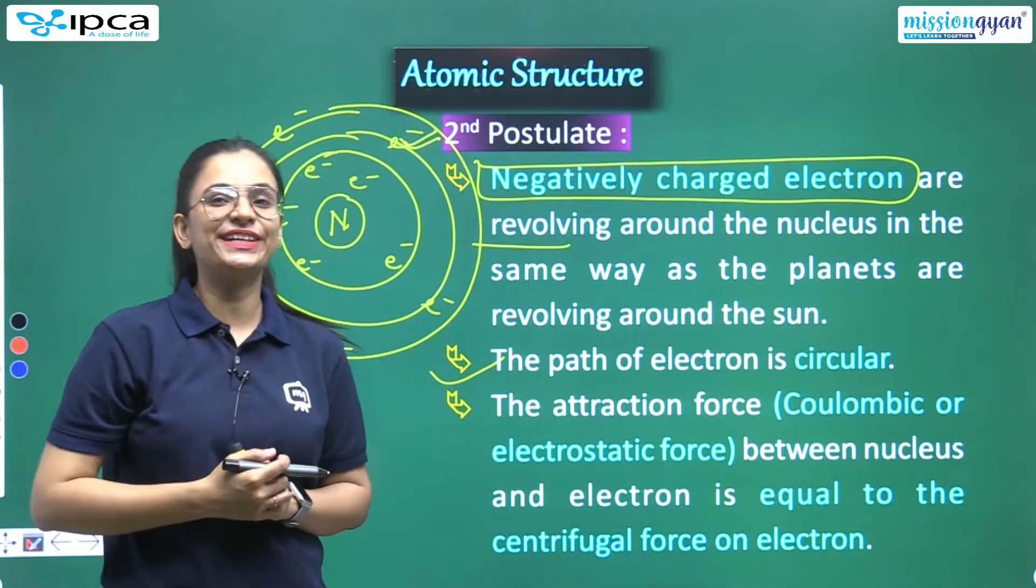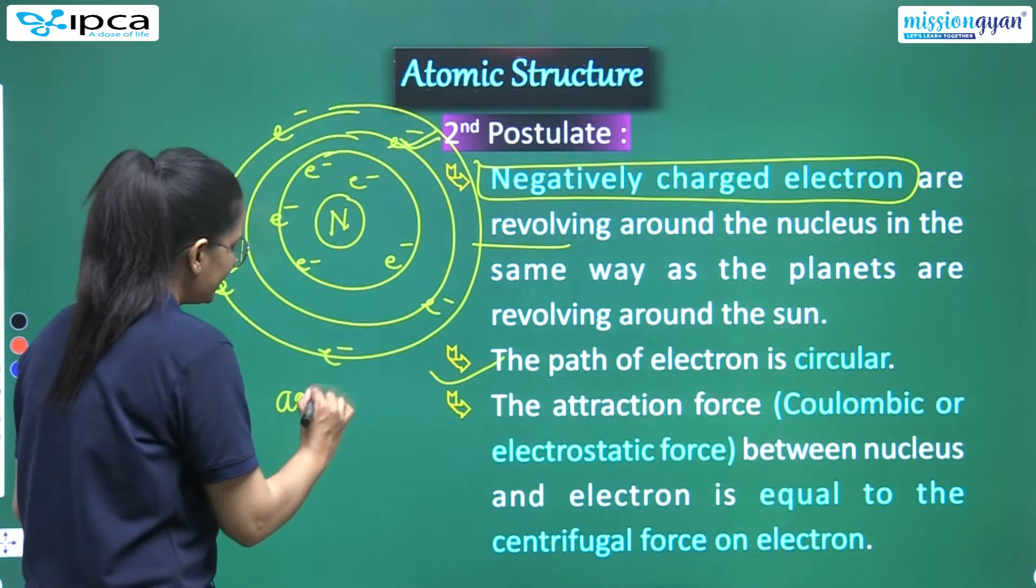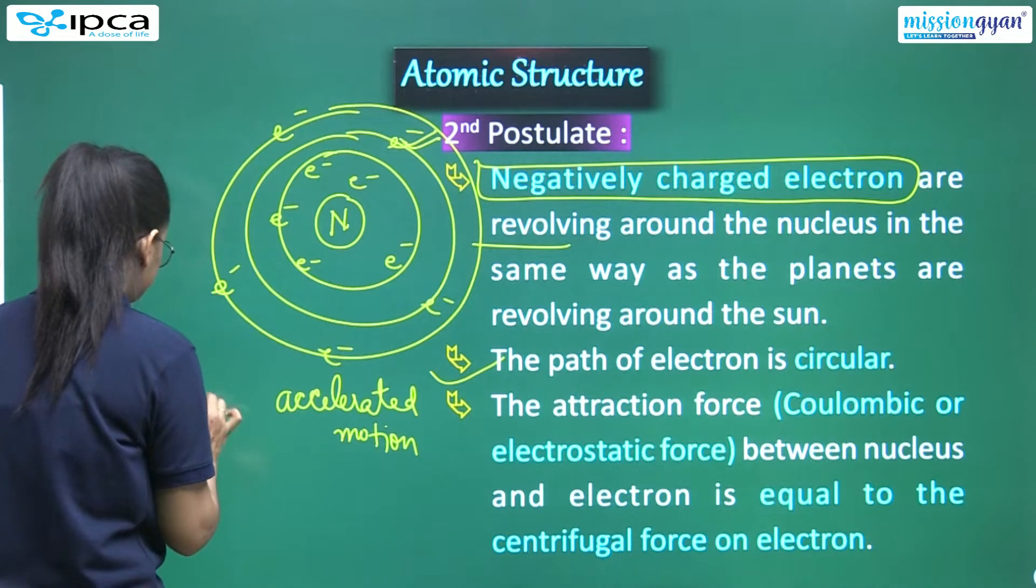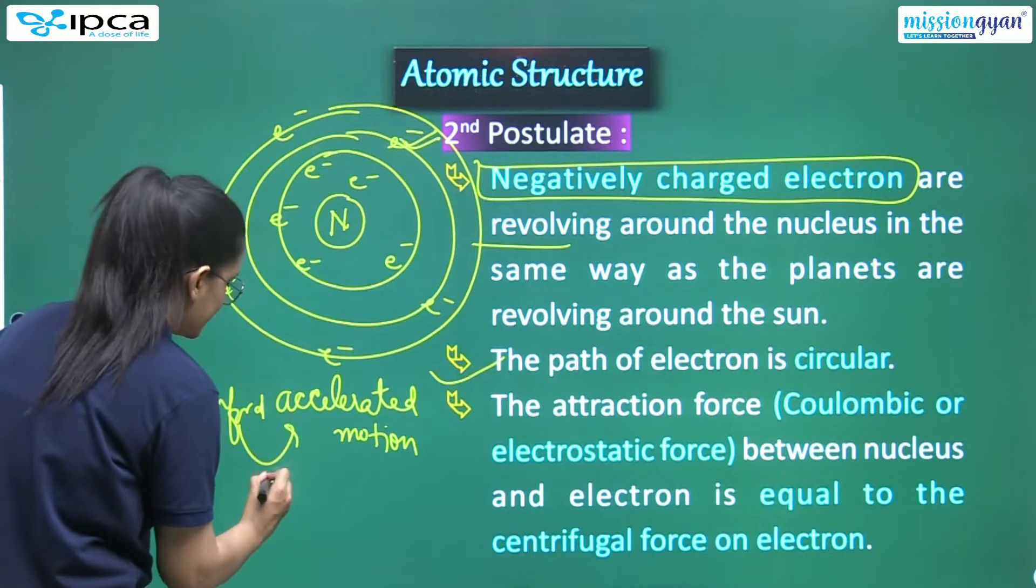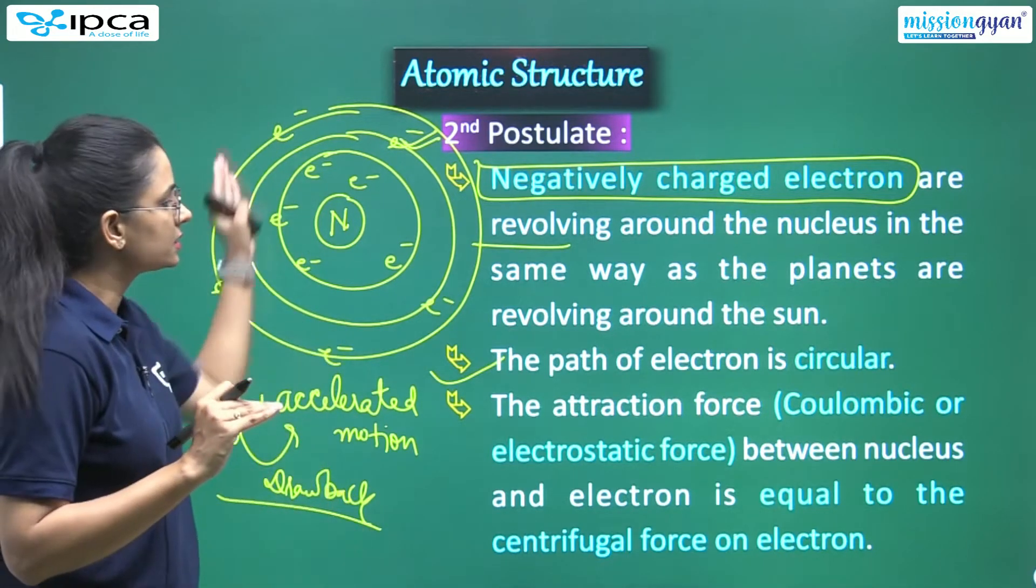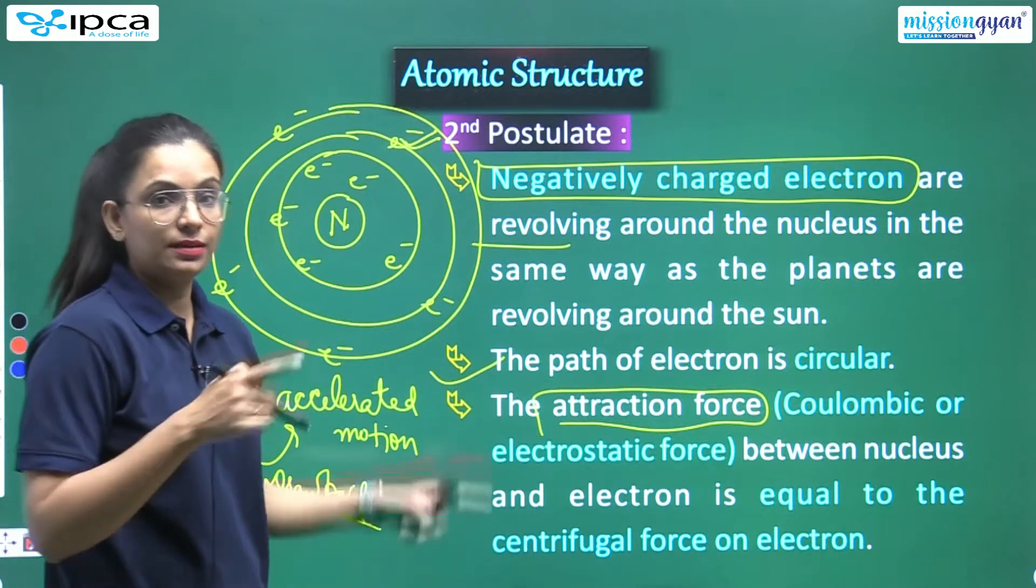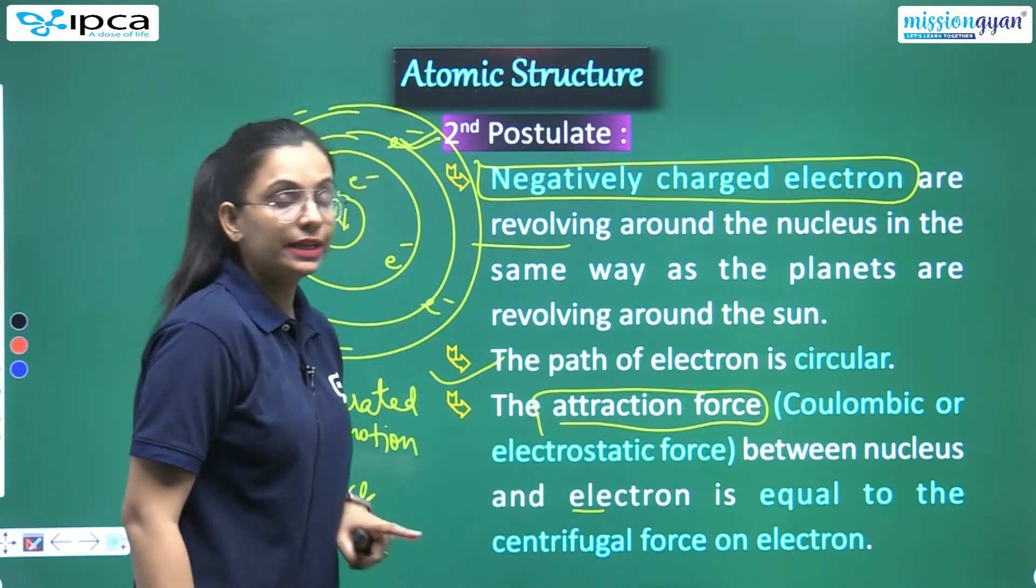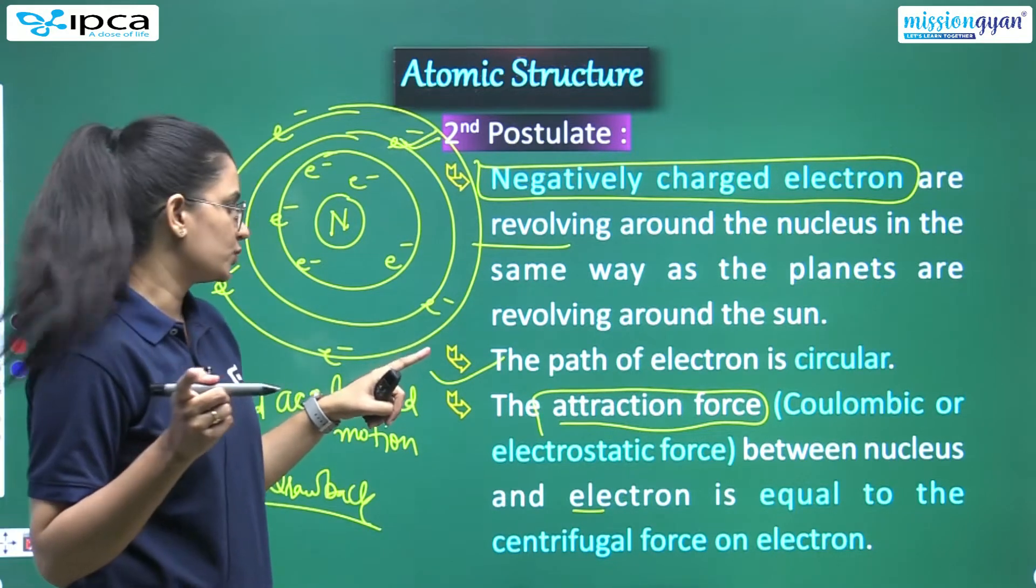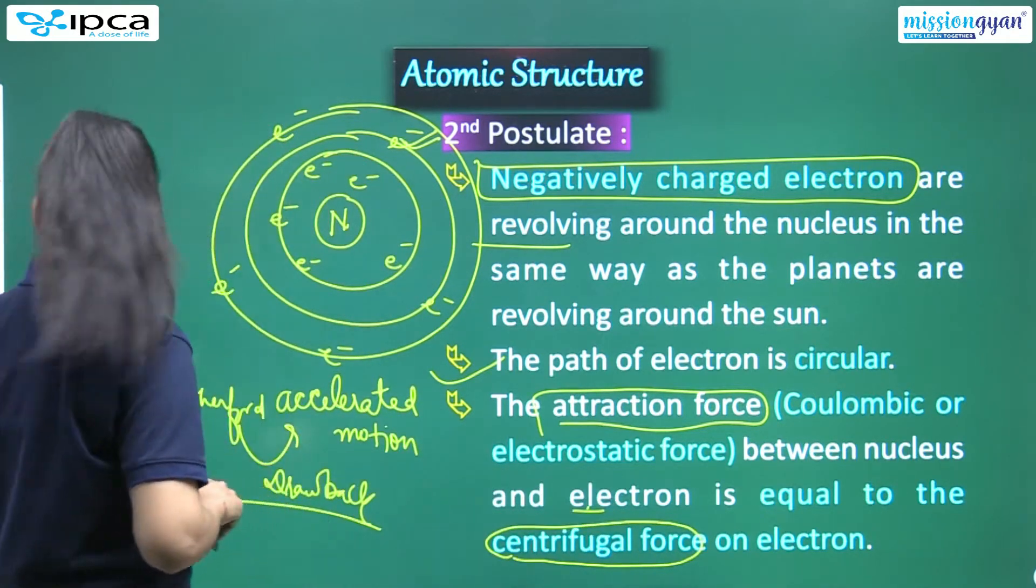These revolving electrons are always in circular motion. What was the drawback they covered here? Mr. Bohr - Rutherford said that electrons are in accelerated motion. Rutherford said that this was the drawback. Mr. Bohr said that electrons are always in circular motion.